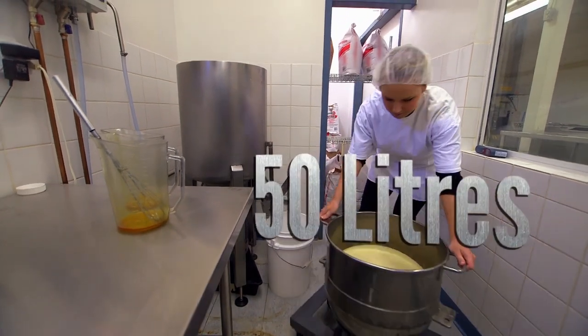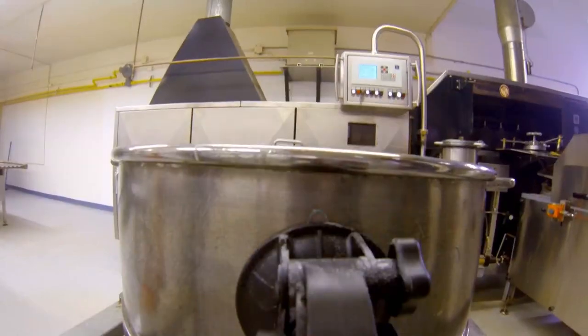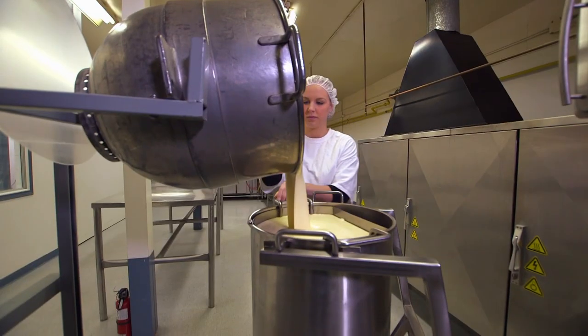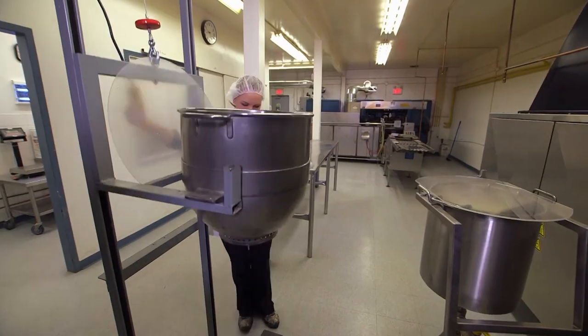Each batch of batter is 50 litres, which is enough to keep the production line going for 45 minutes. The mixture is lifted and poured into a hopper, which feeds the Jupiter 45.